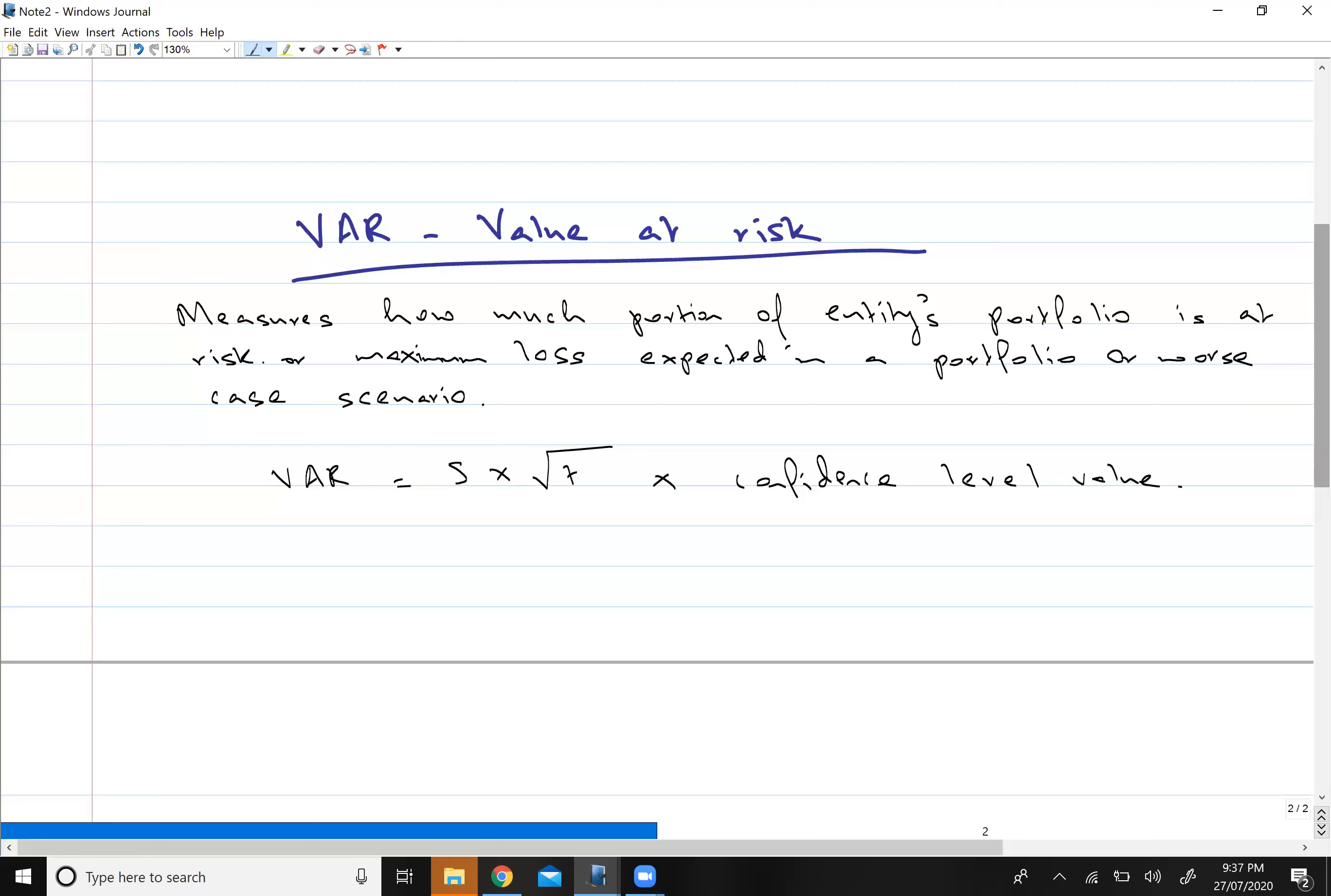That is basically determined with the help of this formula which you can see: S times T times confidence level value. S is the standard deviation, T is the holding period of your investment.